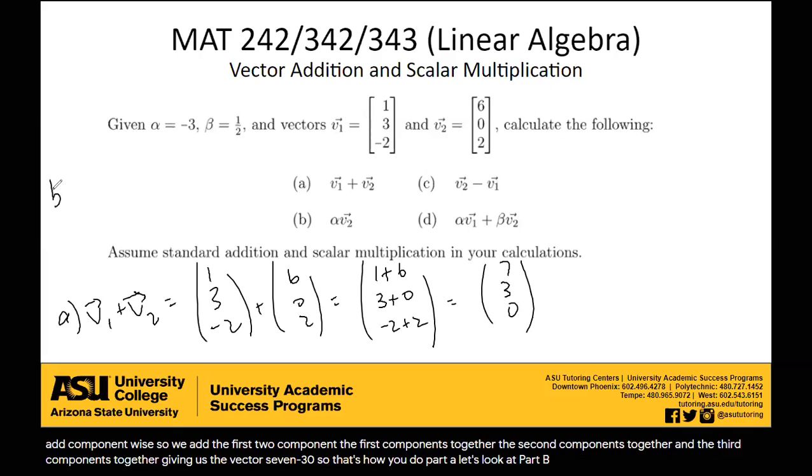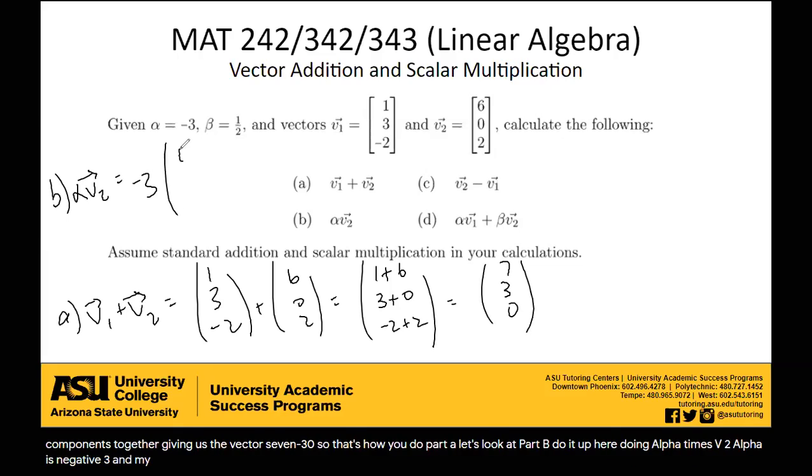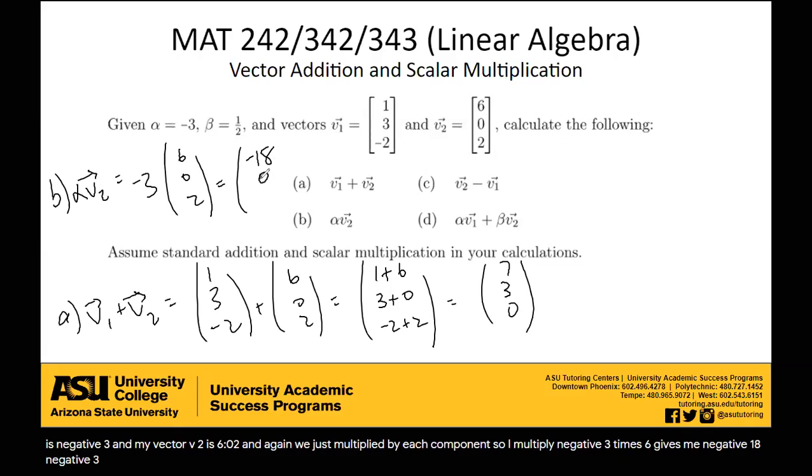Let's look at part B. Doing alpha times v2, alpha is negative 3, and my vector v2 is 6, 0, 2. And again, we just multiply by each component. So I multiply negative 3 times 6 to give me negative 18, negative 3 times 0 to give me 0, and negative 3 times 2 to give me negative 6. So my vector is negative 18, 0, negative 6. Wonderful.